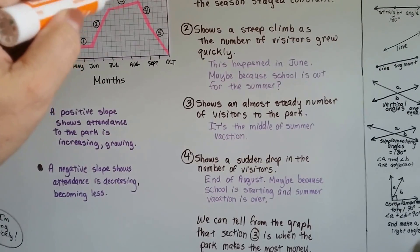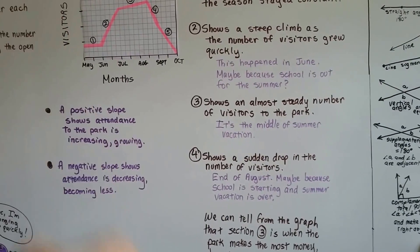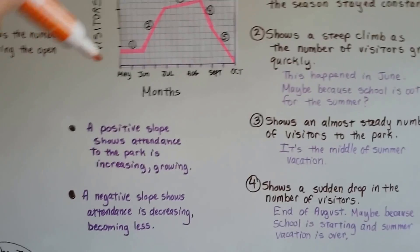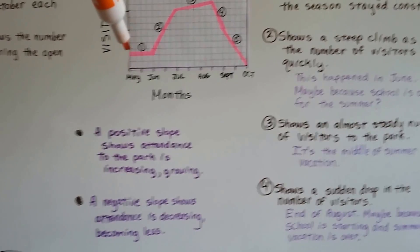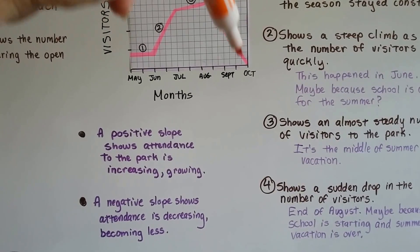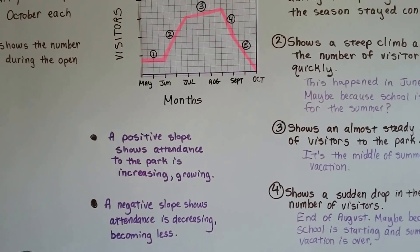So we can tell from this graph in section 3 right here is when the park made the most money and had the most visitors, didn't it? And the positive slope shows the attendance to the park is increasing or growing. And the negative slope shows the attendance is decreasing. It's becoming less.